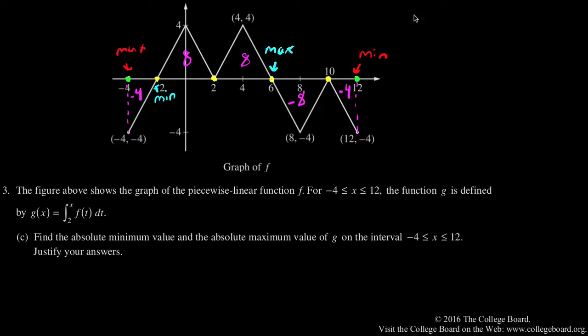My x I'm going to consider are negative 4, negative 2, no not 2, that's not going to give me a maximum or minimum, 6, and 12, and consider g of x.